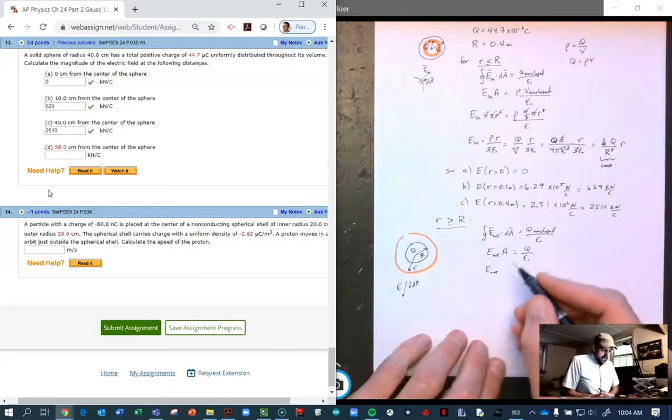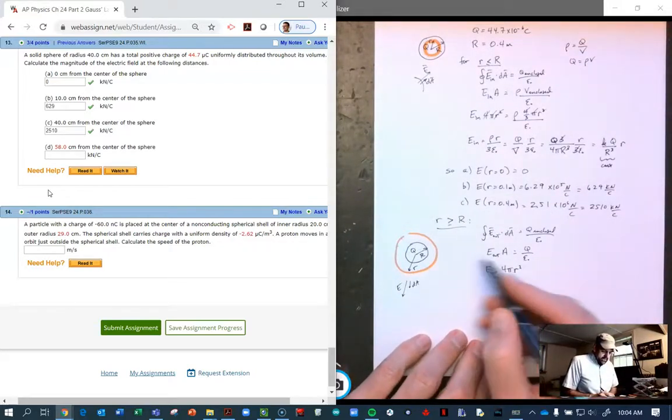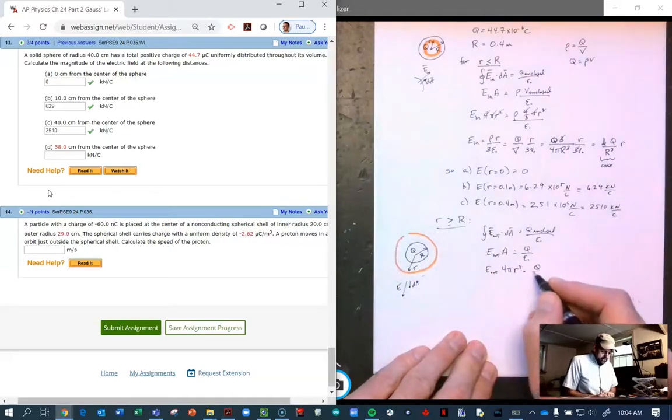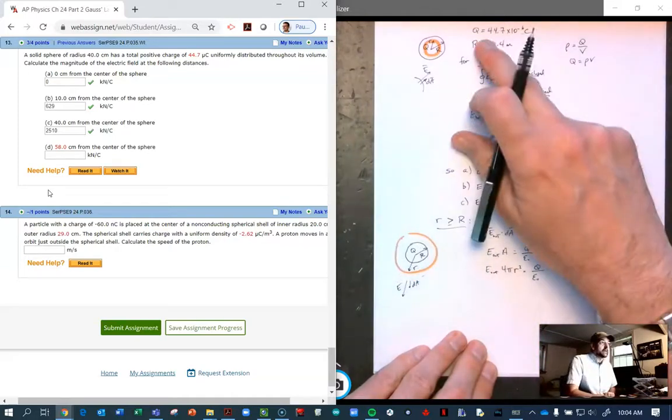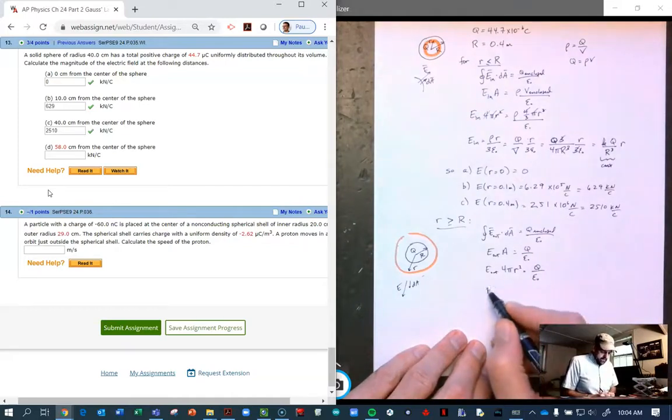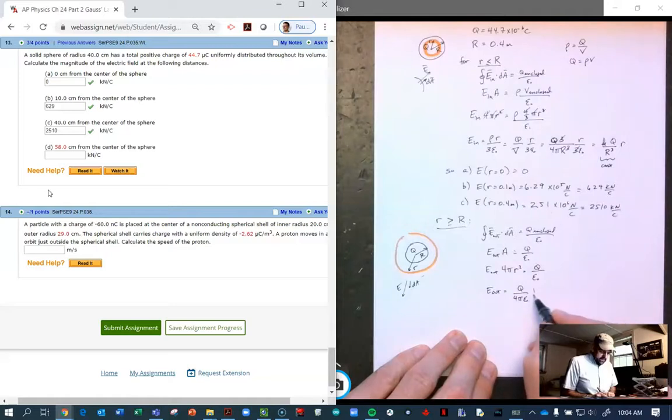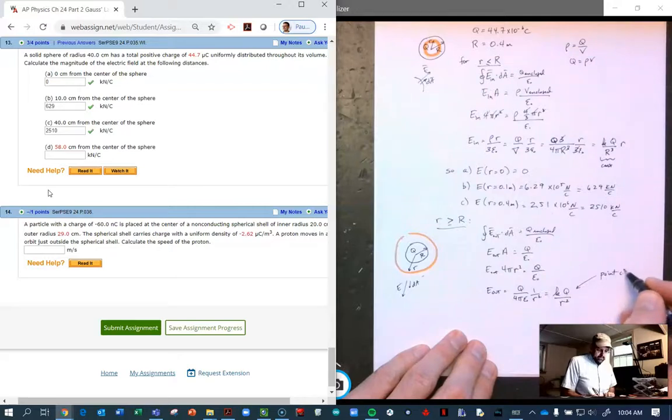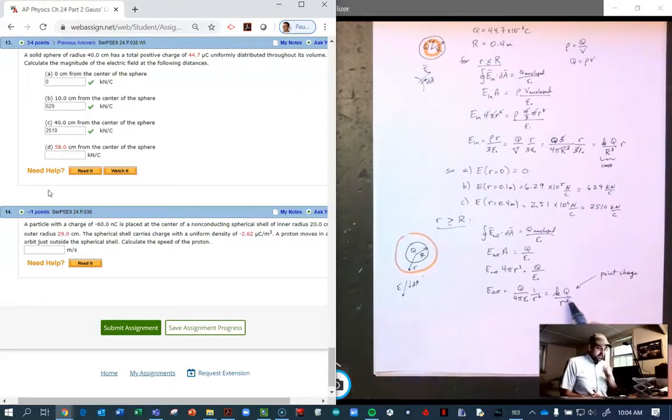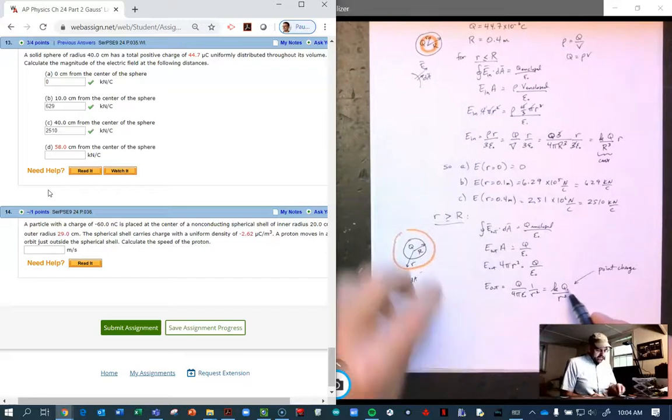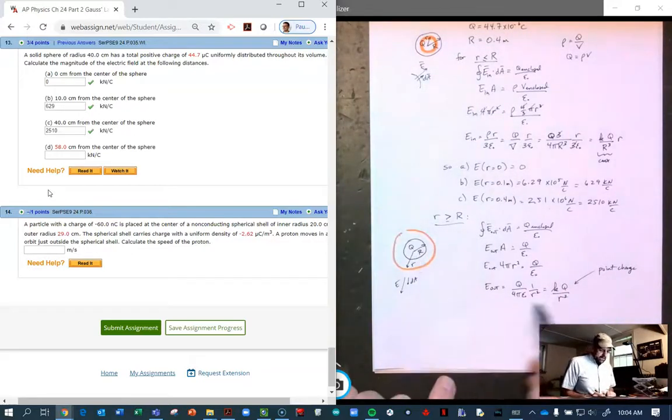So E out times the total area of our Gaussian, which is 4 pi R squared, equals Q over epsilon naught. So E out is Q over 4 pi epsilon naught R squared. And 1 over 4 pi epsilon naught is K. And this is very much like a point charge. We can assume that all of the charge is concentrated to a point, and then the electric field simply mimics that of a point charge.